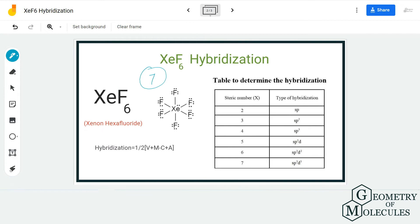As a result, its steric number is seven. And if you look at this table, you can see the steric number seven corresponds to sp3d3 hybridization, and hence this is the hybridization for XeF6.